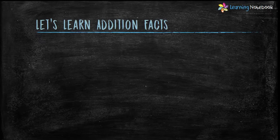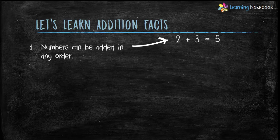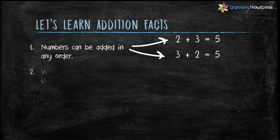Let's start Chapter 2 with addition facts. The first fact is: numbers can be added in any order. For example, 2 plus 3 equals 5, and similarly 3 plus 2 is also equal to 5.